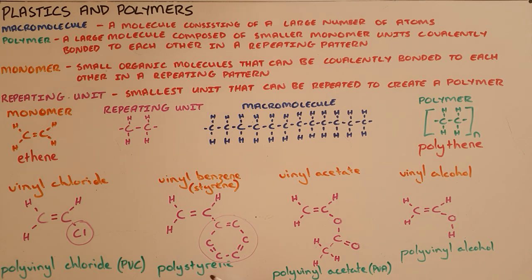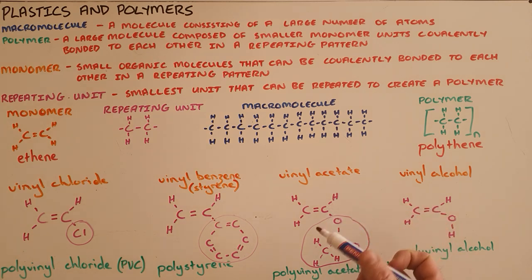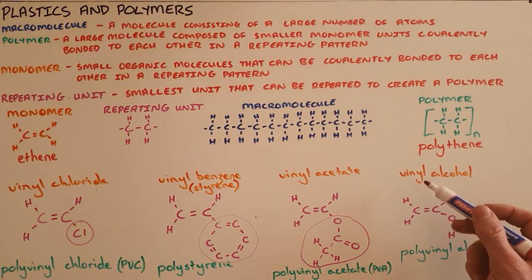A third example is vinyl acetate, where we now have an acetate group of atoms attached to that vinyl molecule, which when repeated in a unit becomes polyvinyl acetate or PVA. And the same goes for the monomer vinyl alcohol, which becomes polyvinyl alcohol.